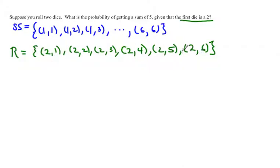you want to find the probability of getting a sum of 5. Out of this sample space, the sum of 5 would be the outcome (2,3). So the probability of